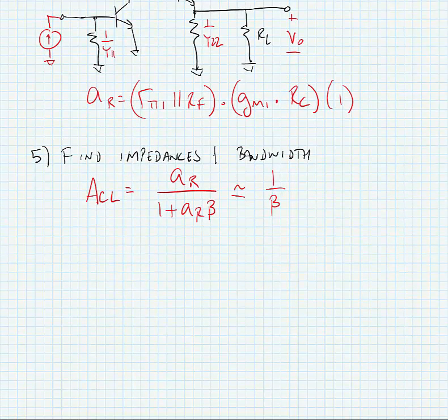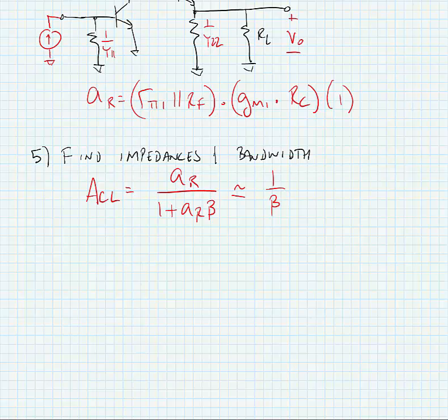Now that we know the open loop gain and beta, we also can figure out what the effects on the impedances are. The input impedance is shunt, and that means that the input impedance after feedback is equal to the input impedance before feedback divided by 1 plus AR times beta.